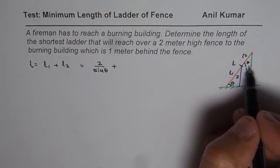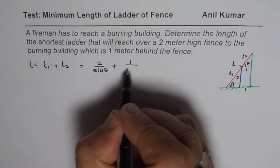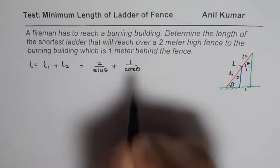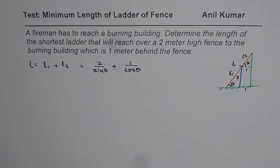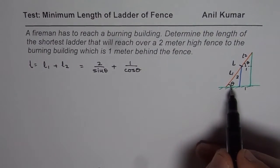Plus in the other triangle we have base as 1, the adjacent side, and therefore L2 is 1 over cosine theta. So that is how we can get the relation of the length of the ladder in terms of angle theta.